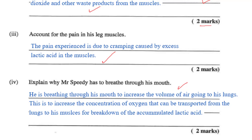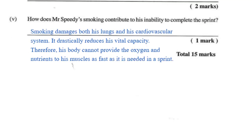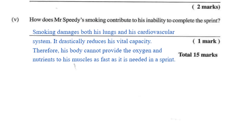The blood can then transfer oxygen to other parts of the body. As for why he's breathing through his mouth — it's to increase the volume of air getting to his lungs, which then increases the concentration of oxygen being transferred to the blood. The most important part is that oxygen is used to carry out aerobic respiration of lactic acid so that it can be broken down to carbon dioxide and water and removed from his muscles.